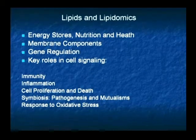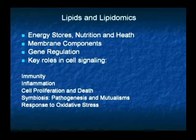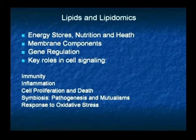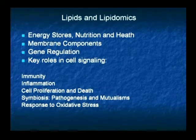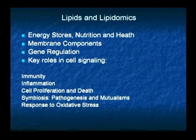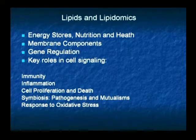So, why are lipids important? You may know that they're a dominant form of energy store used for production of ATP, important in nutrition and health in terms of essential fatty acids. They're obviously a main component of membranes in terms of bilayer membranes. They can affect gene regulation, transcription factors, and post-transcription. Key roles in cell signalling — in terms of inhibition and promoting cell signalling — and some of those that may have relevance to the symbiosis include immunity, inflammation, cell proliferation, and death. And the transition within the symbiotic relationship, which may be from pathogenesis to mutualism depending on how that production works, and maybe a response in terms of oxidative stress.